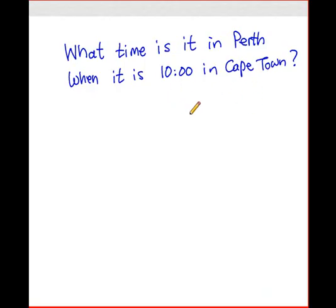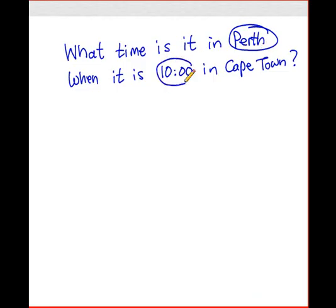What time is it in Perth when it's 10 o'clock in Cape Town? The very first thing you need to do is to underline or circle all the keywords. The first one I would circle is the word Perth, which refers to the city in Australia. Then 10 o'clock — the time — and then obviously Cape Town would be the third keyword.